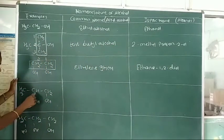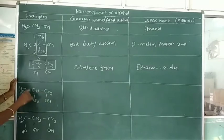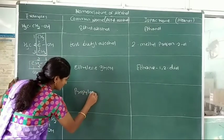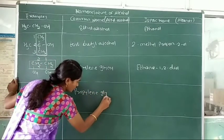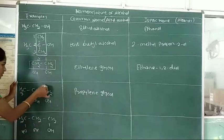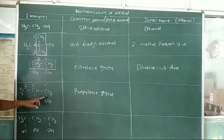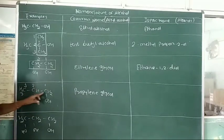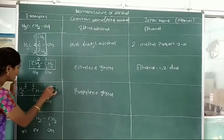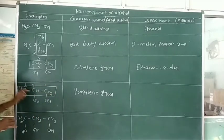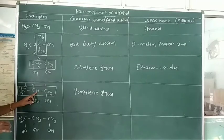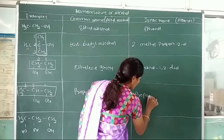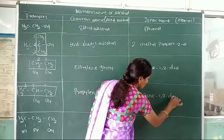Next example: CH2OH-CHOH-CH3. With 3 carbon atoms, the parent is propylene, so the common name is propylene glycol. In the IUPAC system, numbering 1, 2, 3: 2 hydroxy groups are attached to carbon number 1 and carbon number 2. With 3 carbon atoms that is propane, and using the prefix 'di', the IUPAC name is propane-1,2-diol.